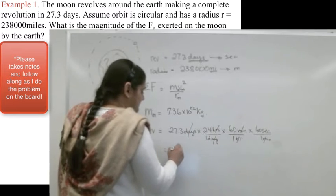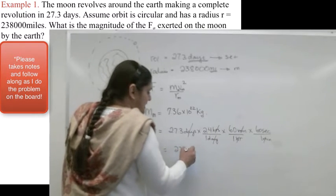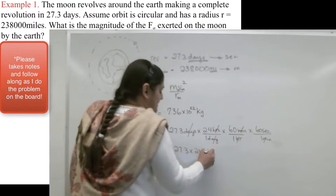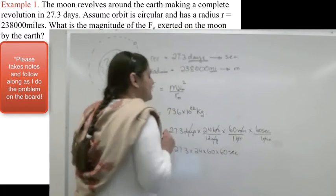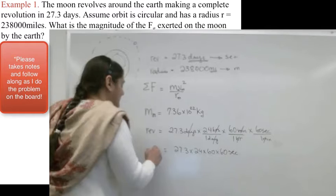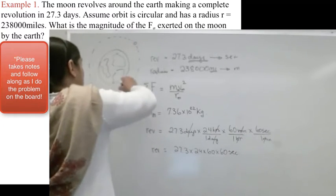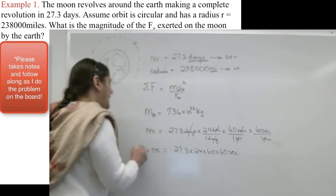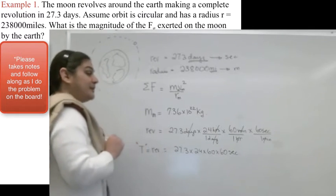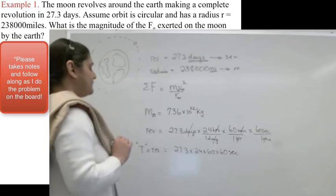Which is 27.3 times 24 times 60 times 60, and the answer will come out in seconds. So I have my revolutions, which is the time that it takes for the moon to come around. That will actually be equal to also the period, which I can call T.